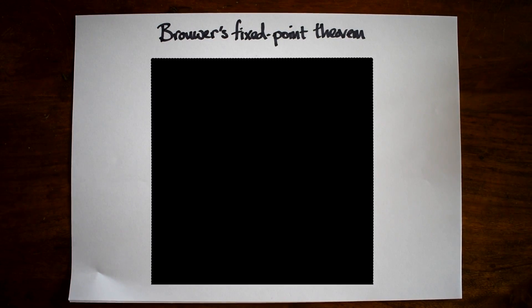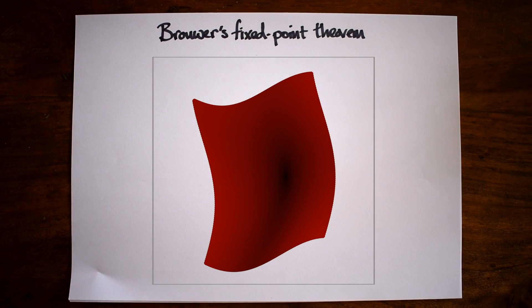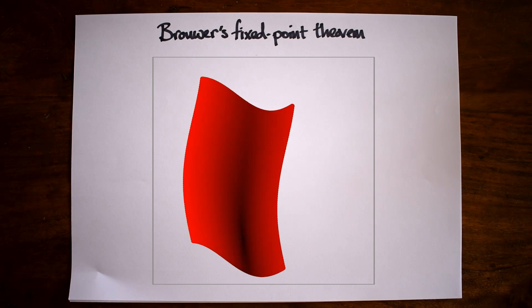Let's deform this square. Parts where the square have moved a lot are coloured in red. Parts that have not moved at all are black.